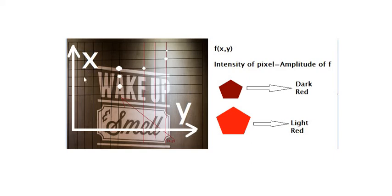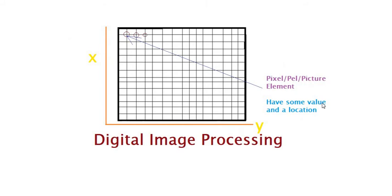Digital image processing means processing of an image digitally, or processing of a digital image. These digital images inside the computer are composed of a finite number of elements having specific location and value. Yes, you're right, these finite number of elements are these points. They have specific location and some value.